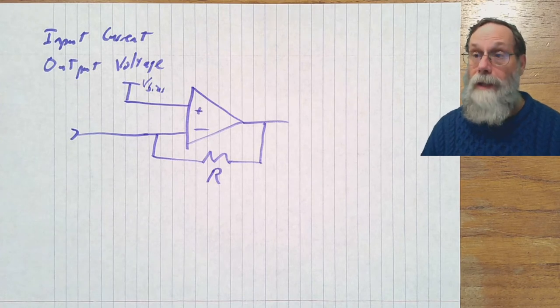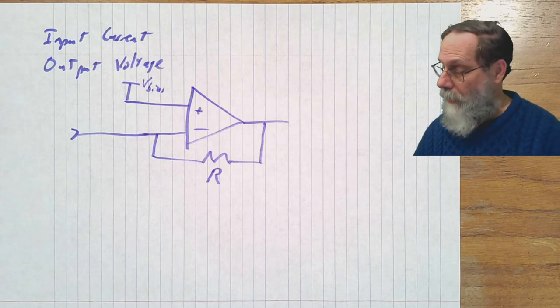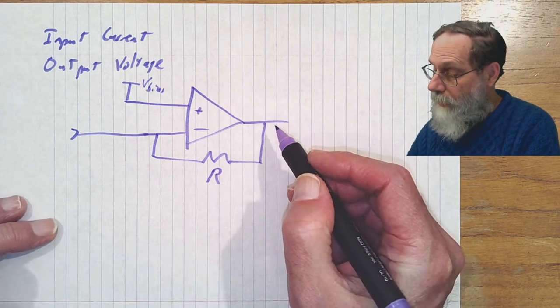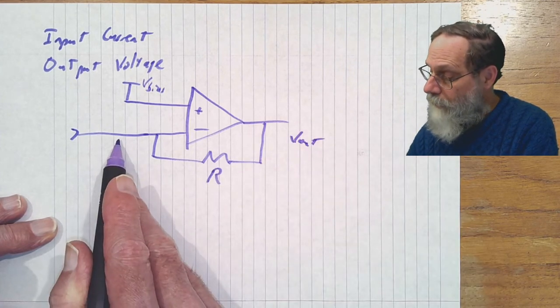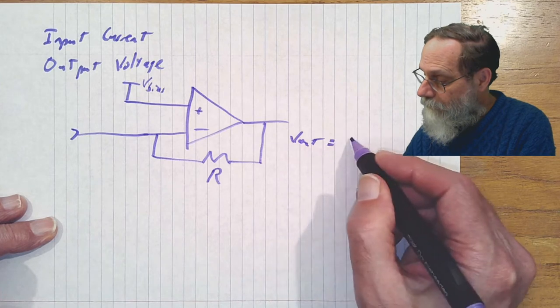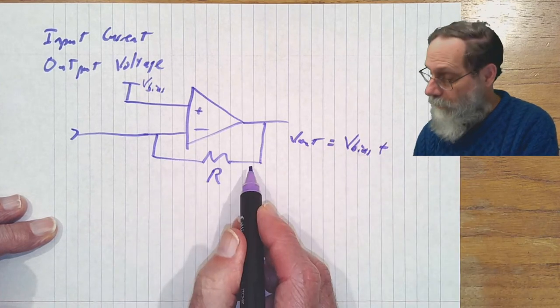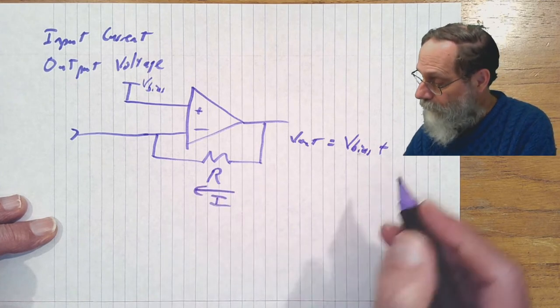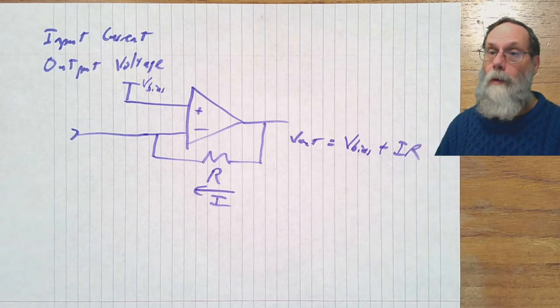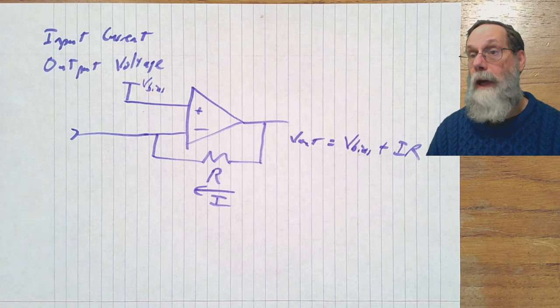So it is applying a bias voltage to the input port and the output voltage is going to be just the input voltage plus the current through the resistor times the resistance. So what we have is the bias voltage plus the IR drop.